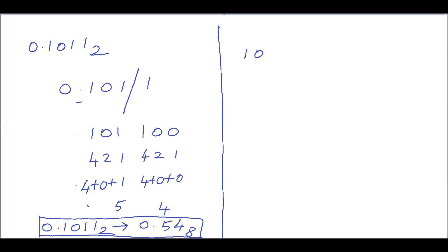Let's see how to convert the binary number 10101.110011₂. After the decimal point, do the grouping from left to right: 110 is one group, then 011 is another. Before the decimal point, do the grouping from right to left: the first group is 101, and the second group is 10. Since the second group has only two digits, add one zero to make it 010.